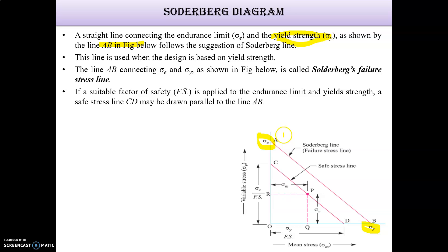Below the failure line AB, there is no failure; above it, failure can occur. We apply a suitable factor of safety (greater than or equal to 1). Dividing Sigma Y by the factor of safety gives point D, and dividing Sigma E by the factor of safety gives point C. Joining C and D gives a line parallel to AB, which is the safe stress line.